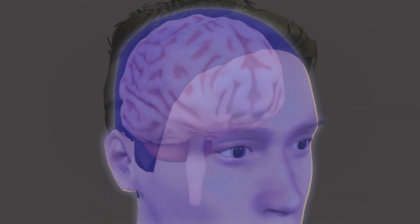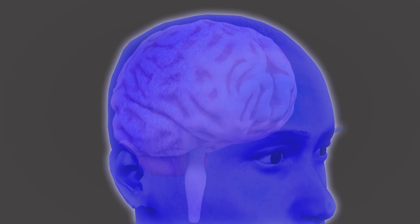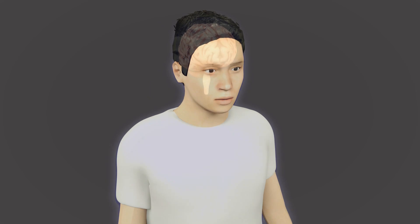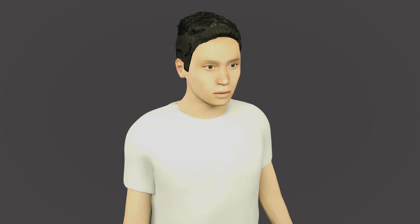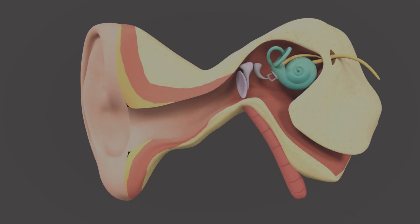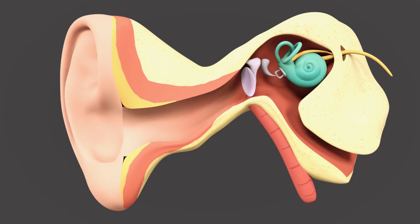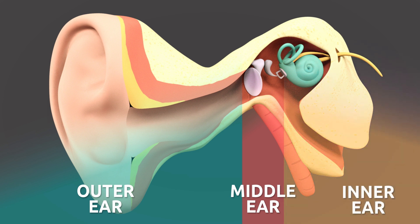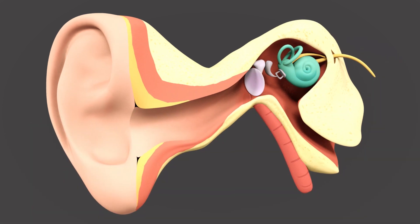Imagine you hear an ambulance siren — your ear will signal the brain, and the brain will then signal the muscles to move so you can walk away. The ear is divided into three parts: the outer ear, the middle ear, and the inner ear.